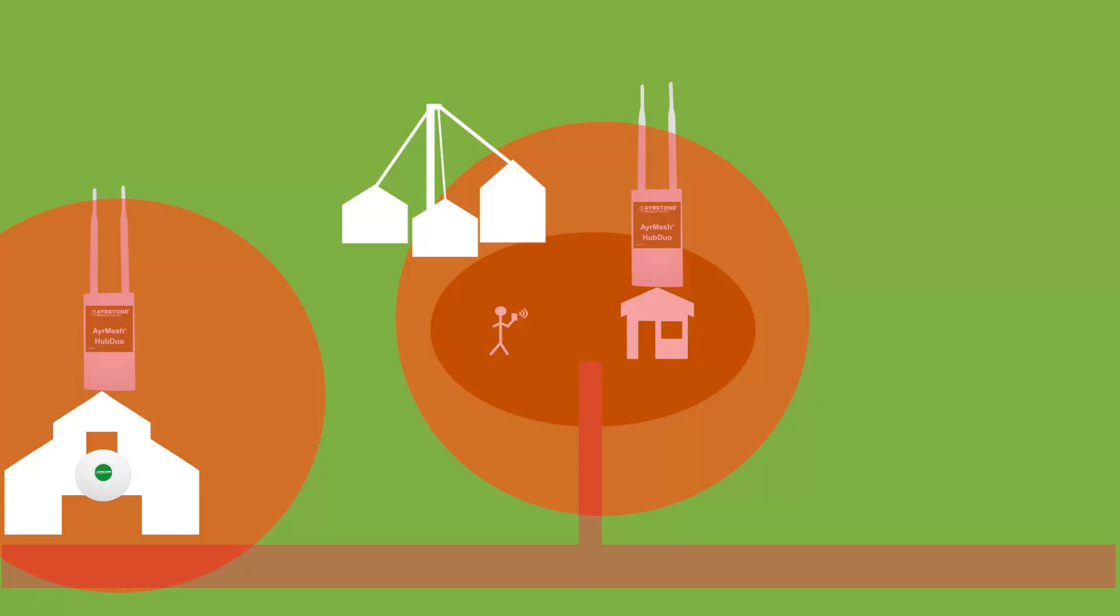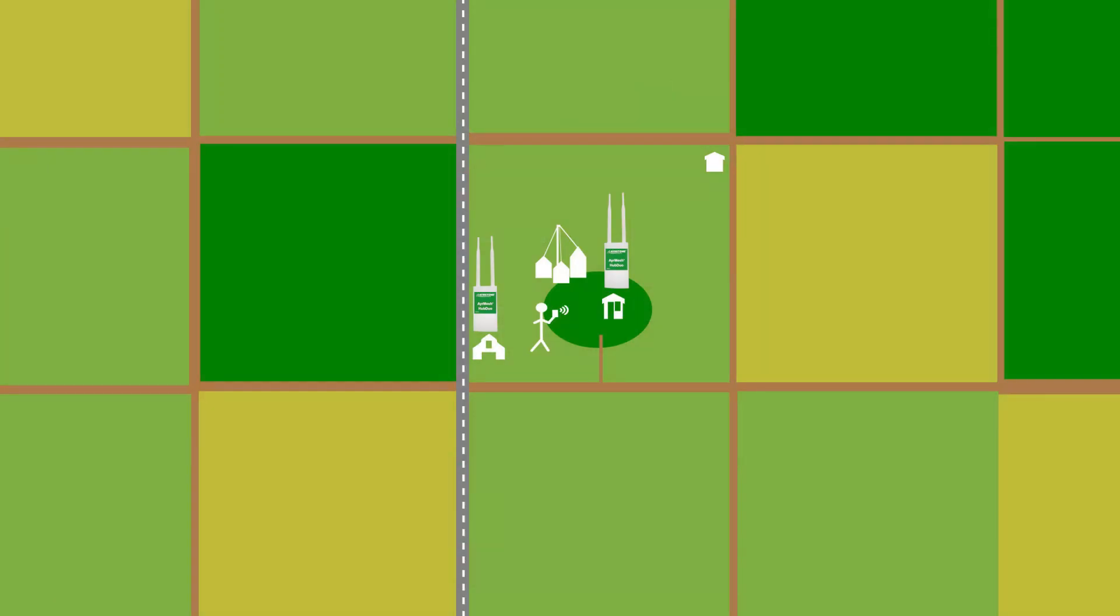Zooming out even further, we can see much more of your fields. First, you can put an AirMesh hub onto that outbuilding in the corner of your section of land, because the hubs can be up to two and a half miles apart. That'll give you Wi-Fi out there for whatever purposes you need.